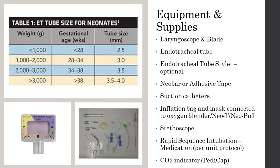When preparing to perform endotracheal intubation, it is important that you gather the right equipment and supplies. This includes the laryngoscope handle and correct blade size — a Miller blade or straight blade, size double zero to one, depending on gestation and weight. You'll also need endotracheal tubes, which also depend on size and gestation: 2.5 up to a 4.0. These are all uncuffed.